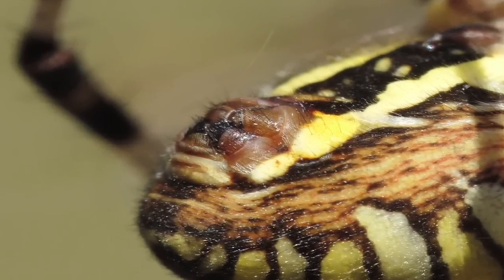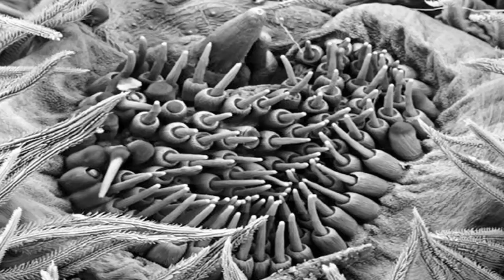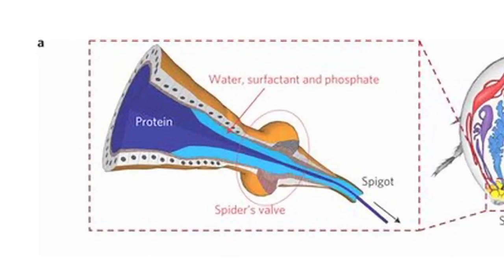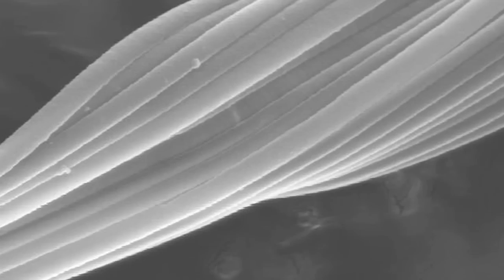Most spiders have six spinnerets. Each of these spinnerets has about 600 microscopic nozzles. When a spider wants to make silk, it pushes its dope through a funneled duct which extracts water, bathes it in acid, and pushes it through the nozzles. It then comes out as solid filaments. Each of these filaments are then wrapped together to make the larger silk fiber.